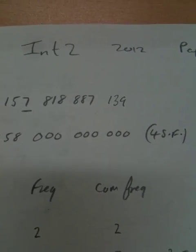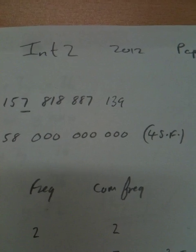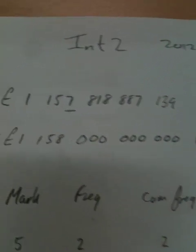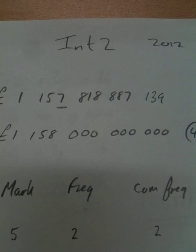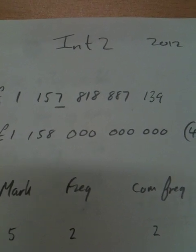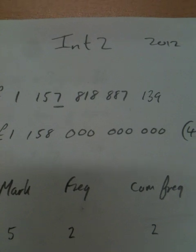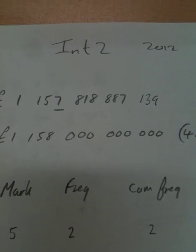Question 1 basically gives us a very large number and says round it to four significant figures. So I've written down the number. There it is there. So that'll be 1 trillion, 157 billion, 818 million, 887,139.